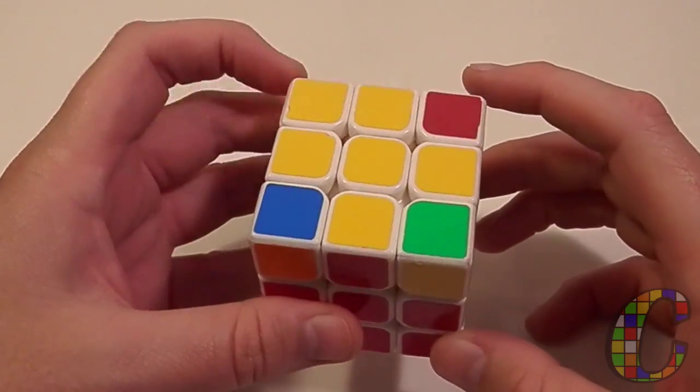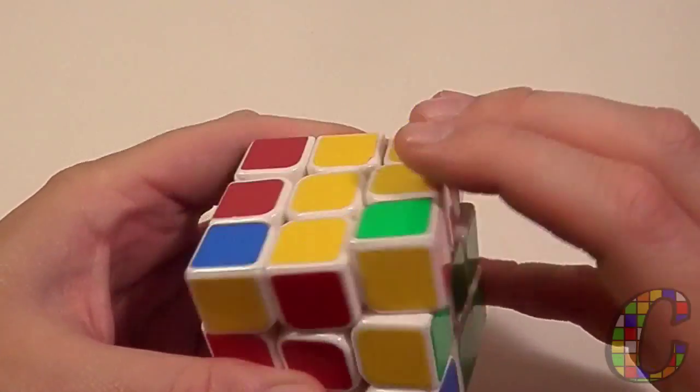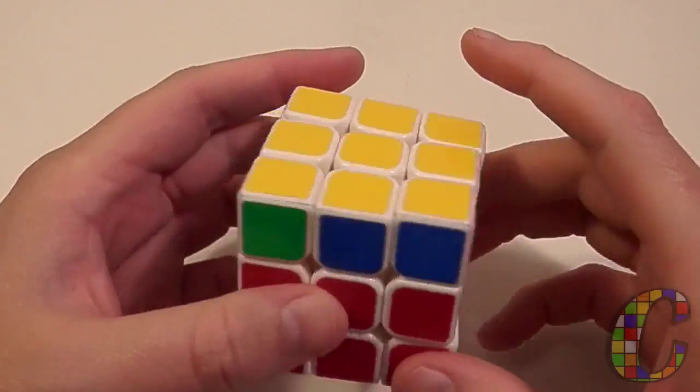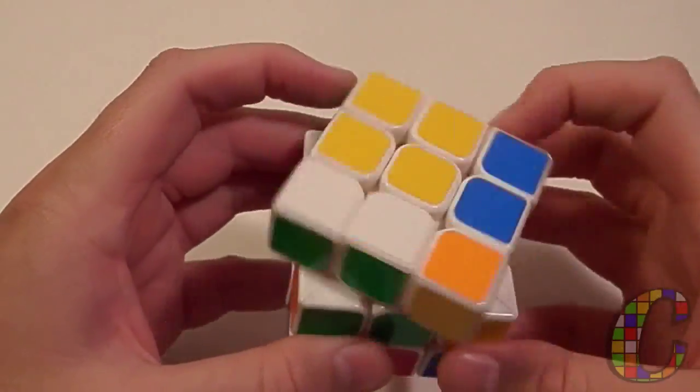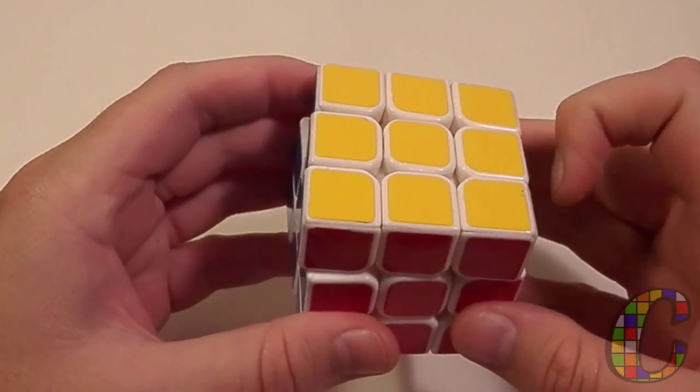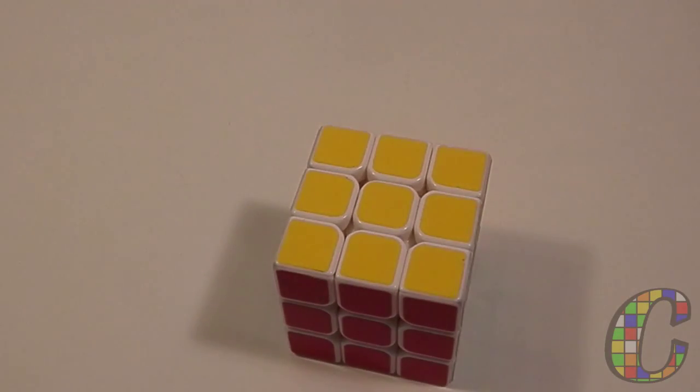Alright, so it looks like we've got a Sune. And what else? A G perm. Alright, next solve.